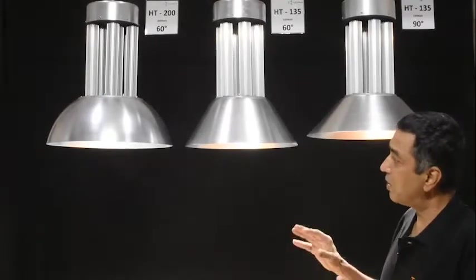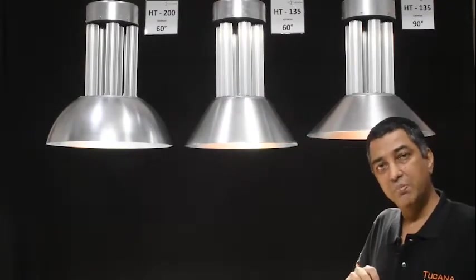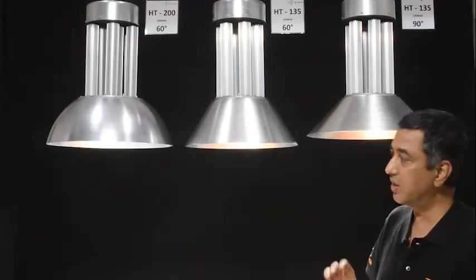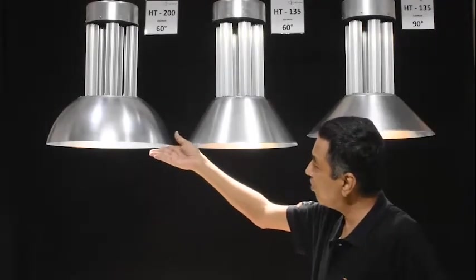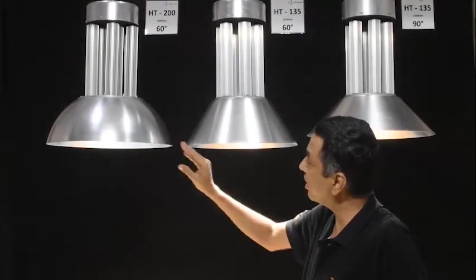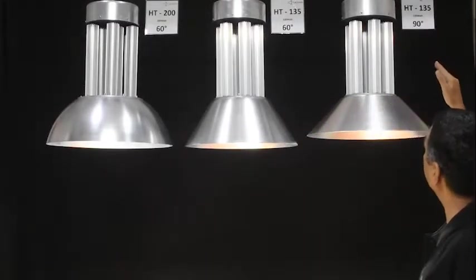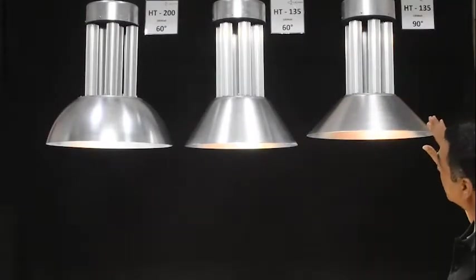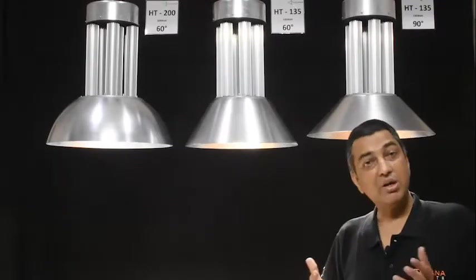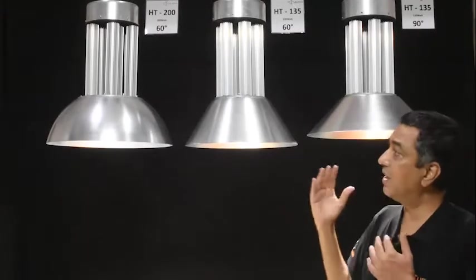Our family of bay lights, we call them HT. These are heat tube based bay lights and we have three models with numerous variants. The highest power light is HT-200 with a 60 degree beam angle. Then we have HT-135 with 60 degree beam angle, and HT-135 with 90 degree beam angle. Depending upon the lux levels and intensity you need at the floor, various lights can be used.